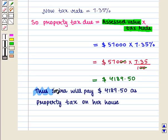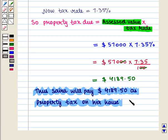Thus Saira will pay $4,189.50 as property tax on her house. This is the required answer. This completes our session. Hope you enjoyed this session.